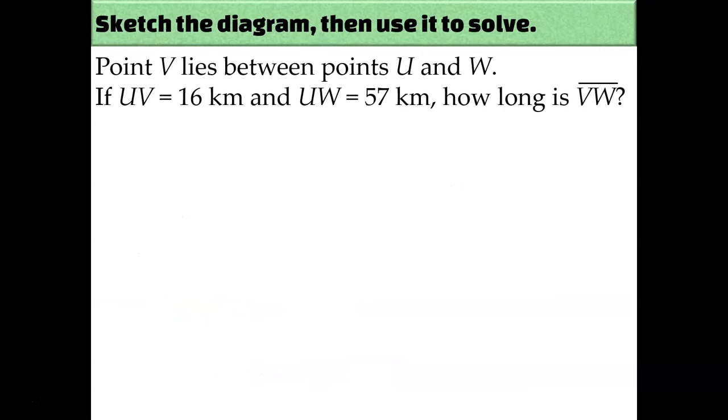Let's try another example where we have to draw the diagram. Point V lies between points U and W. So I need three points, and they have to be collinear because it says that one is between the others. V is the point that lies between the other two points, so I'll label this point as V. Now let's label this diagram with the numerical information. It says that UV is 16 kilometers. And then it says that UW is 57 kilometers. 57 is the length of the entire segment.